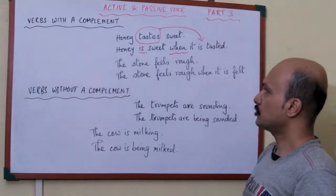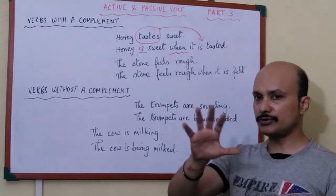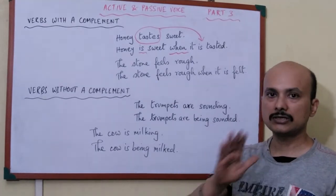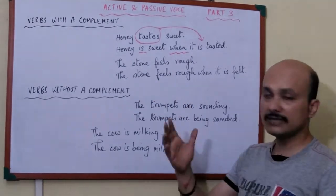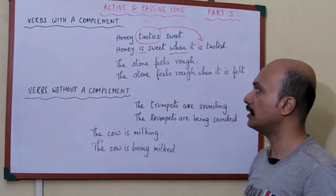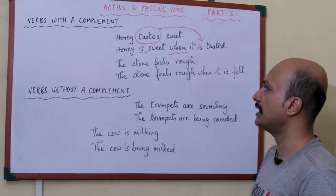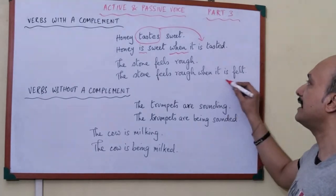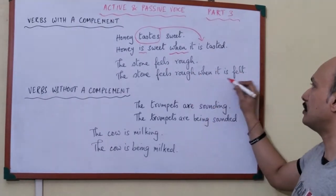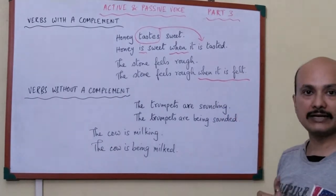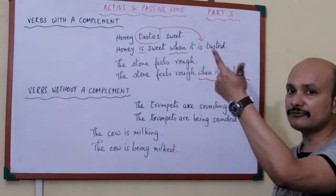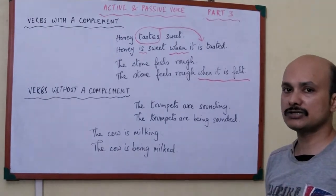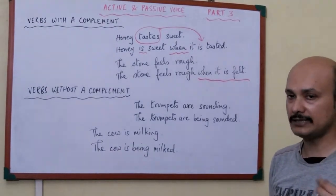The next one: 'The stone feels rough.' How do you know the stone is rough? When you touch it. Just like with honey — you taste it and know it is sweet, similarly you touch the stone and know it is rough. So 'the stone feels rough' — when does it feel rough? When it is felt. We take the verb 'feels', put it in the third form 'felt', write the present tense verb 'is', and say 'the stone is rough when it is felt'.